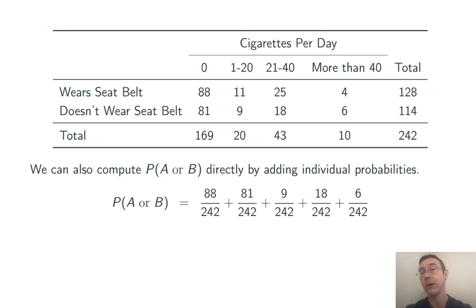So I'm taking those individual probabilities, 88 out of 242, 81 out of 242, 9 out of 242, and so on, and I'm just adding them up.